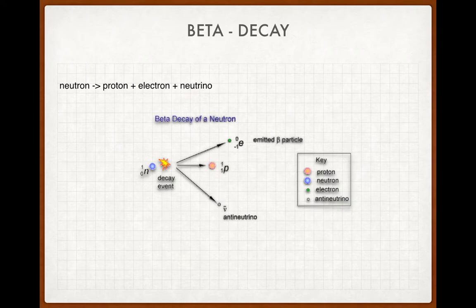So the beta decay of a neutron now is actually a proton plus an electron plus a neutrino, and you should be able to write the nuclear equation for that. I haven't put it down here but we'll see it later on via the notes.